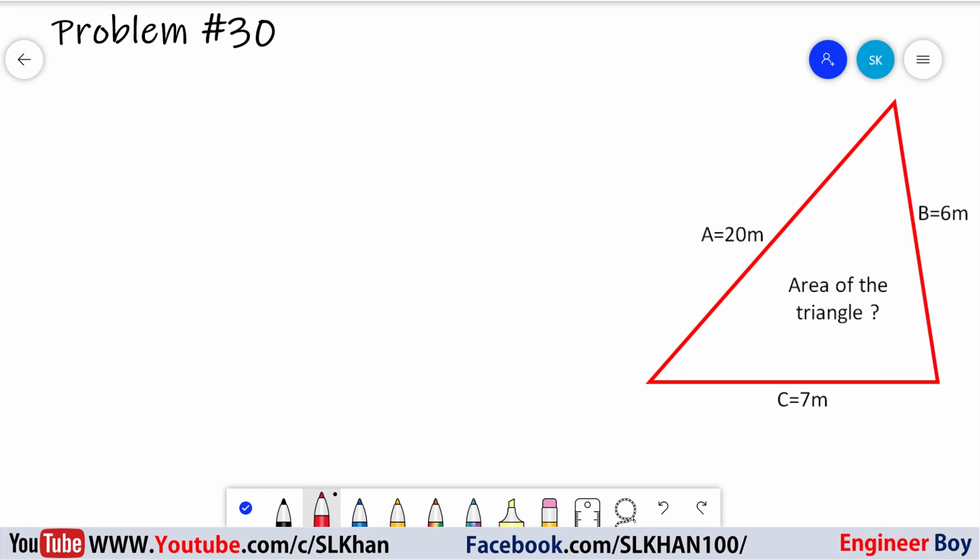Alright guys, we got another problem, problem number 30. We are asked to work out the area of the triangle. The triangle is given with its parameters: A equals 20 meters, B equals 6 meters, and C equals 7 meters.